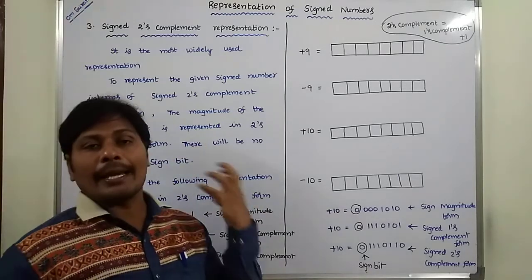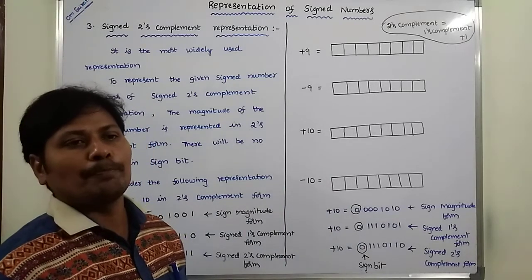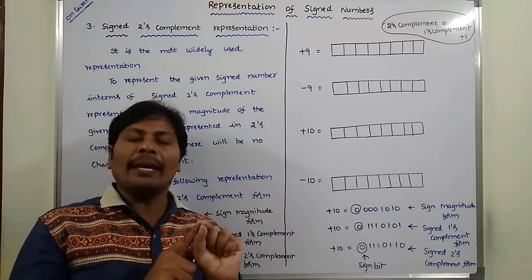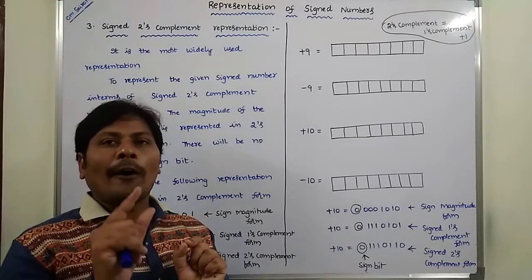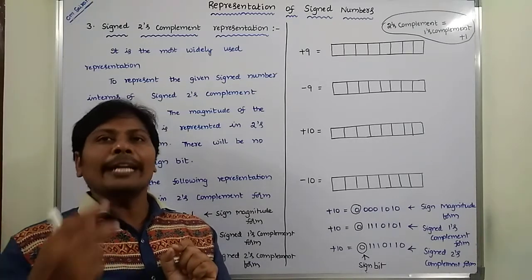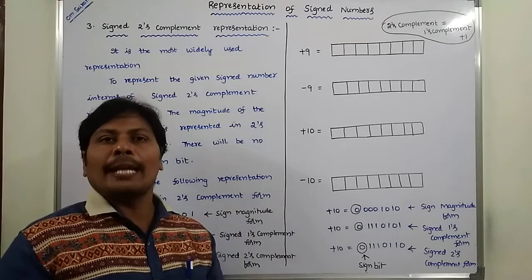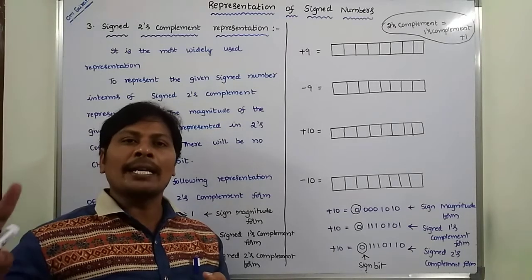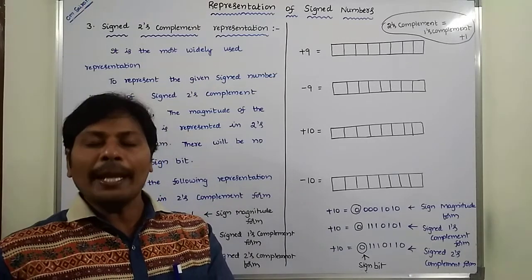There will be no change in the sign bit — it is the same as in one's complement representation. We have to use two rules. First, there will be no change in the sign bit. Second, the magnitude of the given signed binary number can be represented in signed two's complement form, which is obtained by one's complement representation plus one, added at the LSB position.